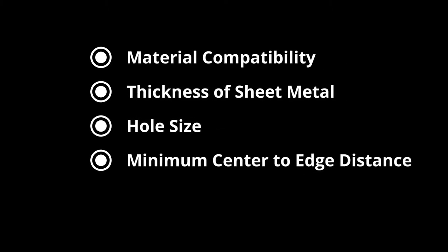Some of the important constraints to consider include material compatibility — which is the type and hardness — thickness of the sheet the fastener is going to be installed into, hole size to insert the fastener into, and minimum center to edge distance. We have covered a lot of this in our Proto Tech Tip video about self-clinching fasteners, linked below, but for today's video the one I want to focus on is the minimum center to edge distance.